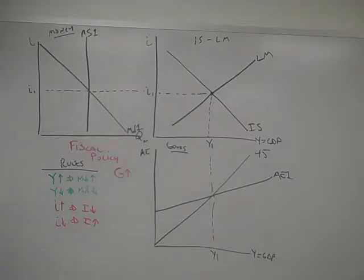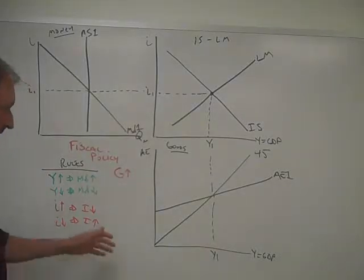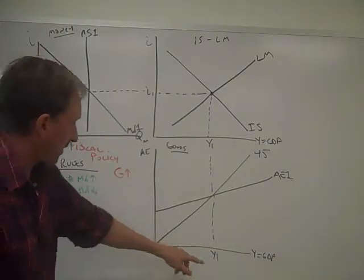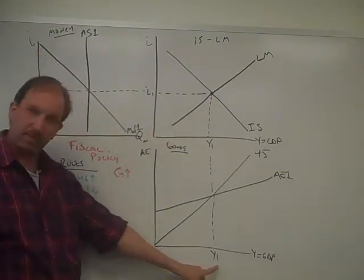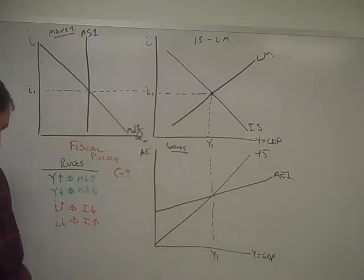Now let's change this thing. Government comes in here and says, I want to increase government spending in order to cause GDP to go up. They increase government spending because they try to push GDP up. So what does that do in the IS-LM model?